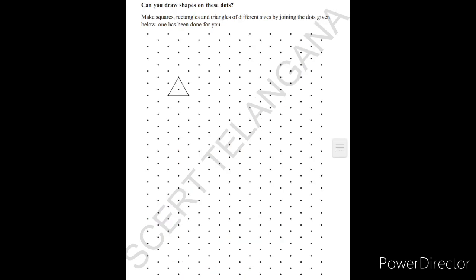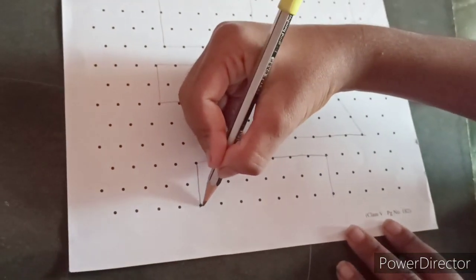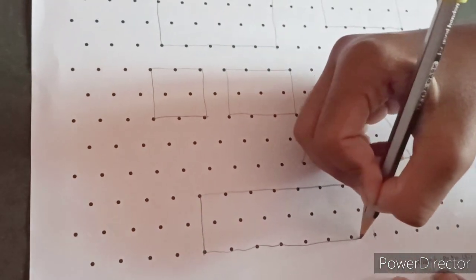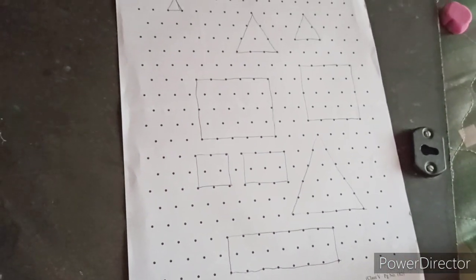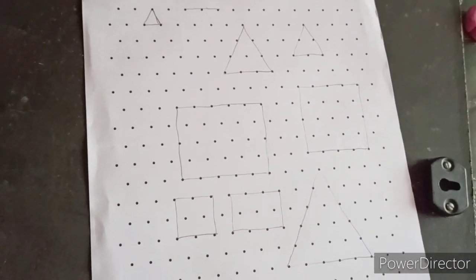Next one. Can you draw shapes on these dots? So you can see here in the figure some dots are given. Make squares, rectangles and triangles of different sizes by joining the dots given below. One has been done for you. So already one triangle is drawn here. Now try to draw other shapes also, that is rectangles, squares. See like this, draw different shapes, different sizes. So I have drawn here a few for examples.